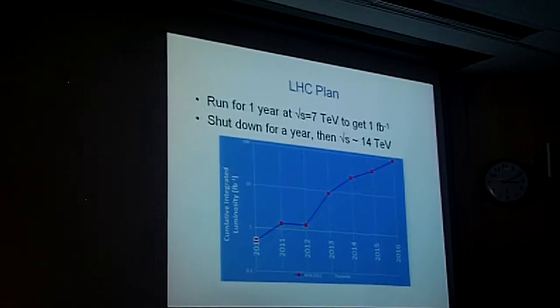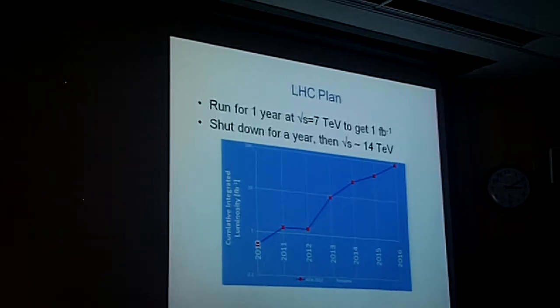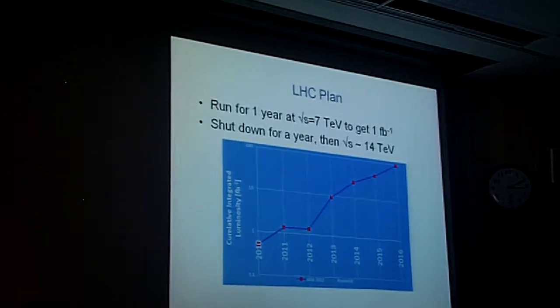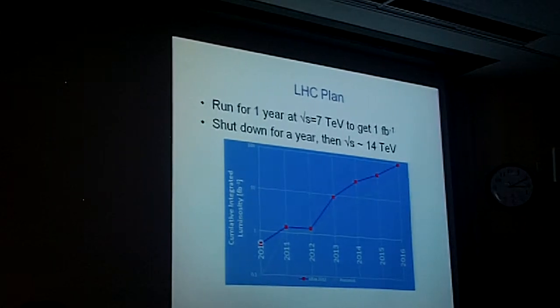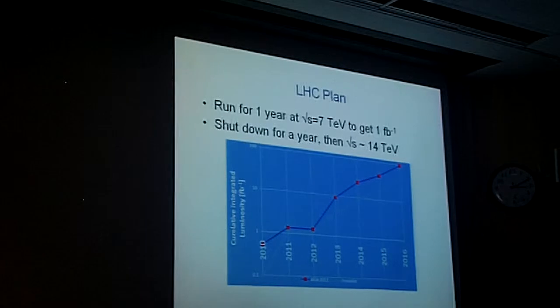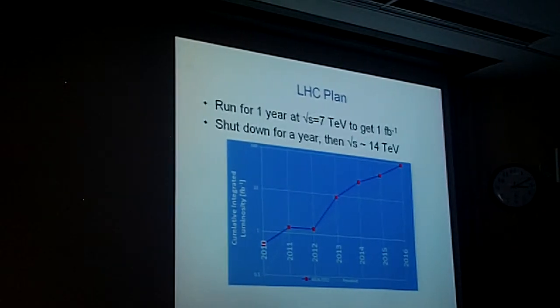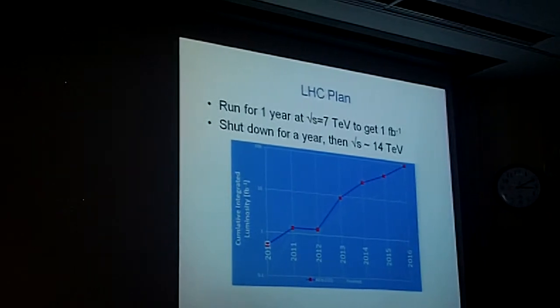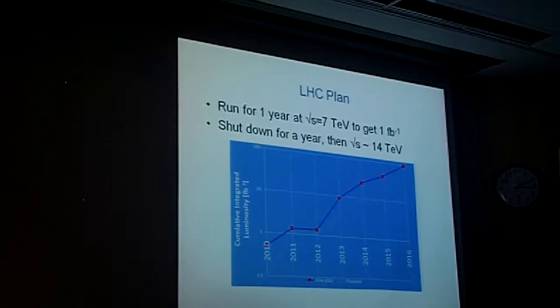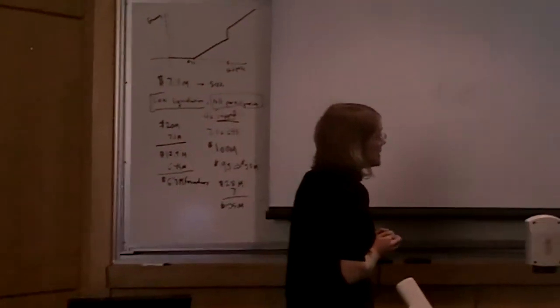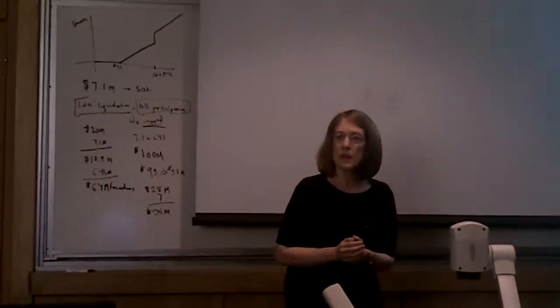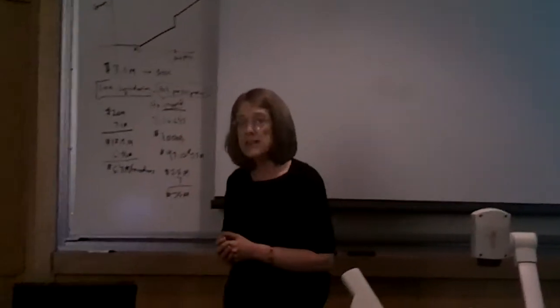And then we start to accumulate luminosity. And you can see by 2013, the plan is to get about 10 inverse femtobarns. By 2016, maybe 100 inverse femtobarns. So in the next six years or so, we expect somewhere on the order of 100 inverse femtobarns. The first moral is that when the theorists get up and show you their thoughts with 300 inverse femtobarns, you should just go to sleep or something, because that'll be a while. But 10 inverse femtobarns, and you'll see in Ulrich Heinz's talk later, that's enough to actually really discover this particle.